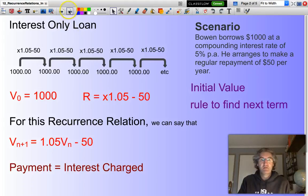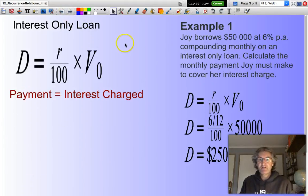The maths is fairly straightforward, and we'll go through an example. Joy borrows $50,000 at 6% per annum, compounding monthly on an interest-only loan. Calculate the monthly repayment Joy must make to cover her interest charge.